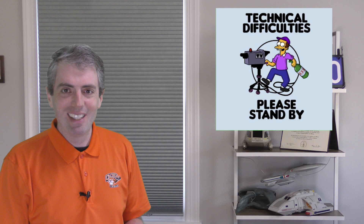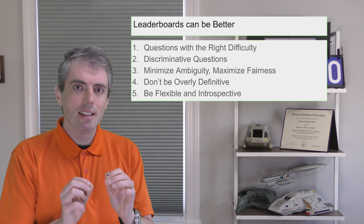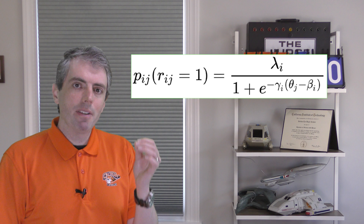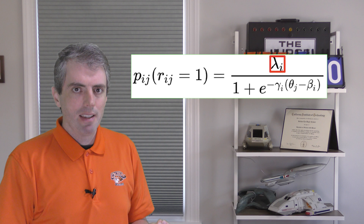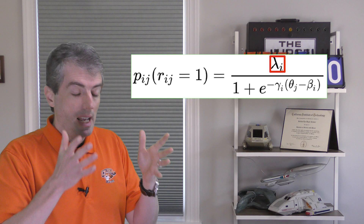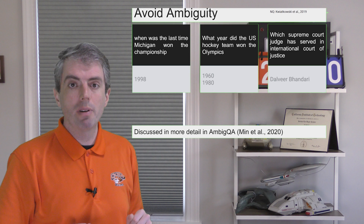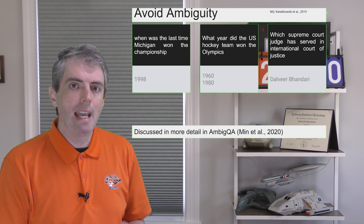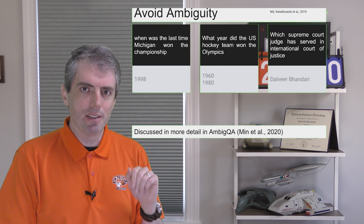Next suggestion: maximize fairness, minimize errors and ambiguity. We gave an example of how the gamma term can detect bad questions, but so can the lambda term. The smaller the feasibility, the minimum probability of a system getting it right — so even if you're very smart, there's something wrong with the question that turns anyone trying to answer it into a coin flip. One source of randomness could be ambiguous questions, covered in more detail in AmbigQA from Siwon Min. Here are three examples from natural questions with their official answers — do you see any problems with these questions?